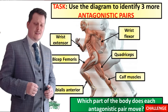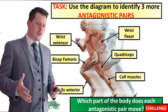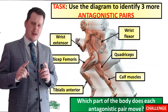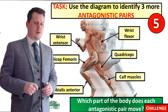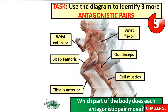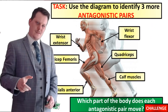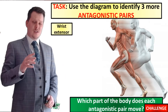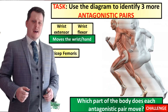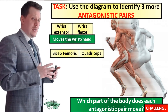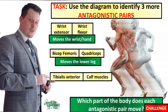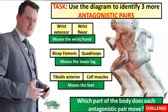Use this diagram to identify three more antagonistic pairs, and as a challenge identify which part of the body those pairs move. Antagonistic pairs are usually located in a very similar part of the body, so keep that in mind. Our first pair is the wrist extensor and the wrist flexor, found in the forearm — they move the wrist and hand. Next are the bicep femoris and the quadriceps, found in the upper leg but moving the lower leg. The third pair is the tibialis anterior and the calf muscles — in front of and behind the shin — and these move the feet.